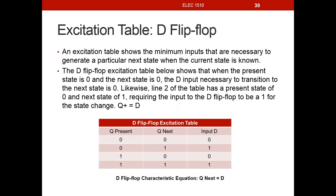For a D flip-flop, we'll develop what's called the excitation table, which will show the minimum inputs necessary to generate a particular next state when the current state is known. We know the present state from our state transition table, and we also know what we want the next state to be. So we want to determine what the input must be on a D flip-flop in order to generate the next state output that we want. These excitation tables are based on the characteristic equation of the D flip-flop.